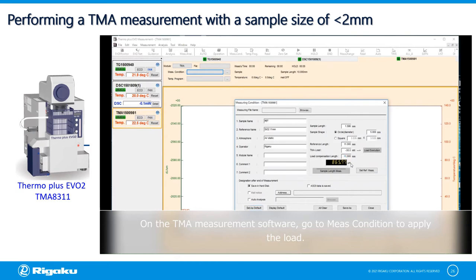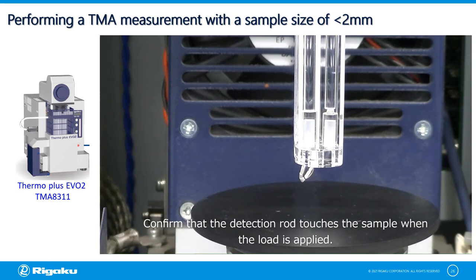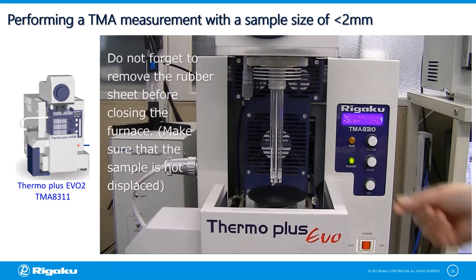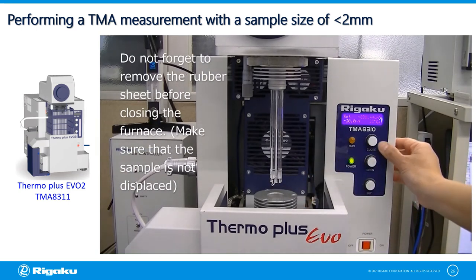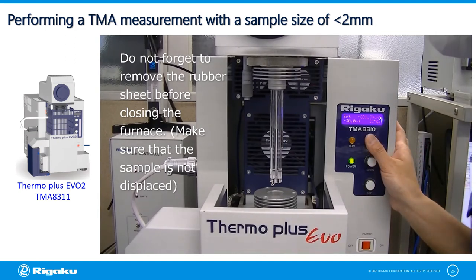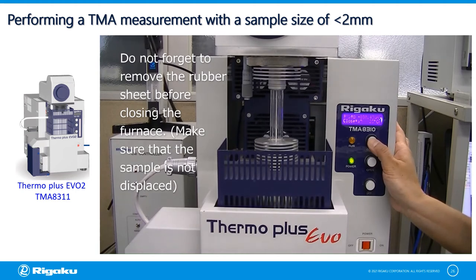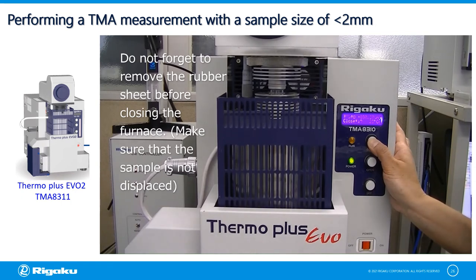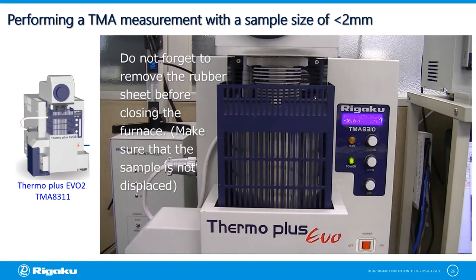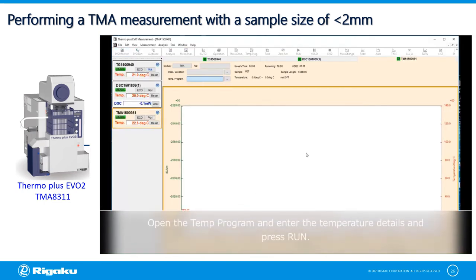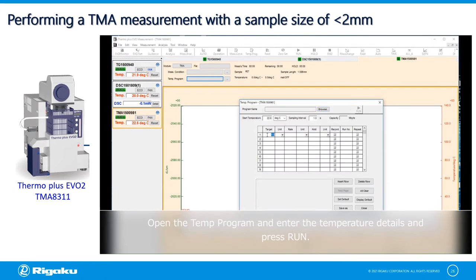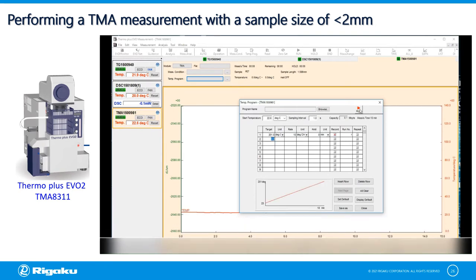The load compensation length is equivalent to the sample stage plus your sample material. Confirm that the detection rod touches the sample when the load is applied. Do not forget to remove the rubber sheet before closing the furnace, and make sure the sample is not displaced when closing the furnace. After closing the furnace, go back to the software and set the measurement condition such as temperature range and heating rate. Open the temperature program, enter the temperature details and maximum temperature for your measurement, then click run.